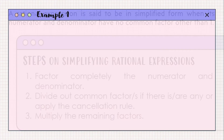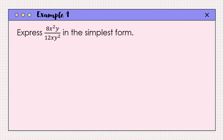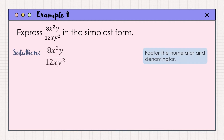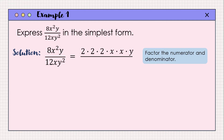Let us have Example 1: express 8x squared y all over 12xy squared in simplest form. First, factor the numerator and denominator. The prime factors of 8 are written as 2 multiplied by 2 multiplied by 2, followed by the factors of the variables x squared and y, which are x times x times y. For the denominator, the prime factors of 12 are written as 2 multiplied by 2 multiplied by 3, and for the variables we have x multiplied by y multiplied by y.